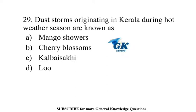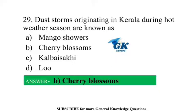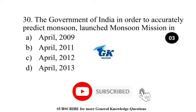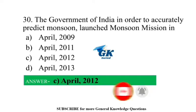Dust storms originating in Kerala during the hot weather season are known as cherry blossoms. The Government of India, in order to accurately predict monsoon, launched the Monsoon Mission in April 2012.